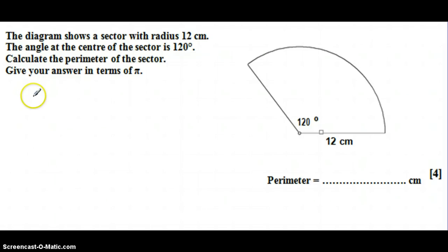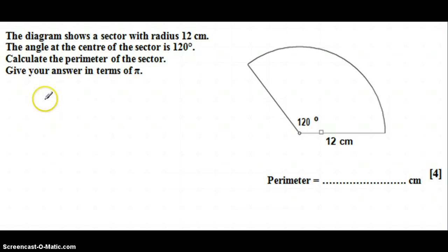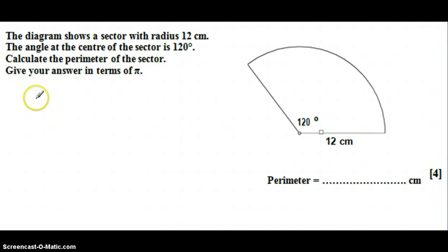We're looking at finding the perimeter of this sector. One of the things you need to know for the perimeter of a sector is how to work out the arc length first. The arc length is the curved length of the sector.